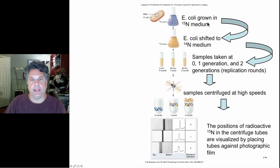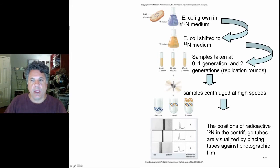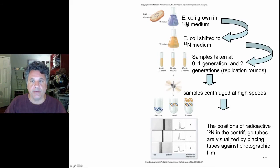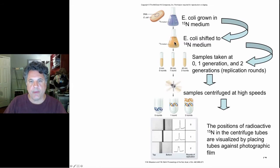Here's what they did. They used bacteria — E. coli, the human gut bacterium — and they grew those bacteria in liquid medium that contained the heavy isotope of nitrogen, N15. That would label their DNA with heavy nitrogen via the nitrogenous bases. They then switched the E. coli to a medium containing the normal isotope of nitrogen, and as the bacteria replicated, they would incorporate light nitrogen into the nitrogenous bases and therefore into their DNA.